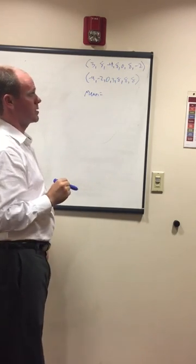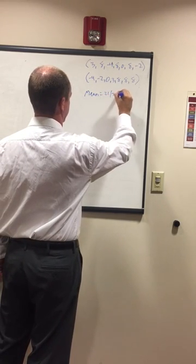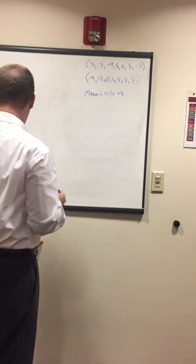Negative three plus eight is a five. Five plus eight, thirteen. Thirteen plus eight, twenty-one. Twenty-one divided by seven, three. That's mean. Mean is three.